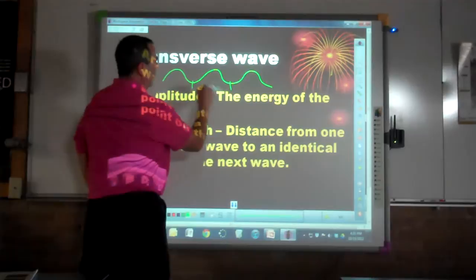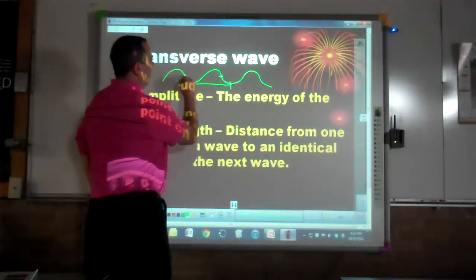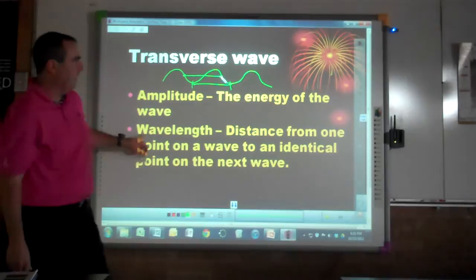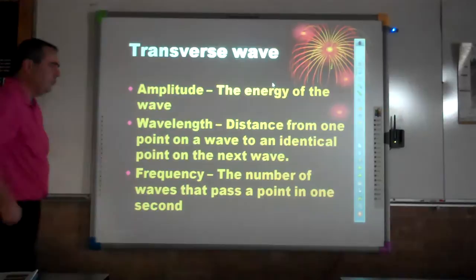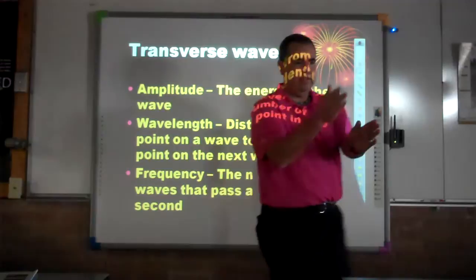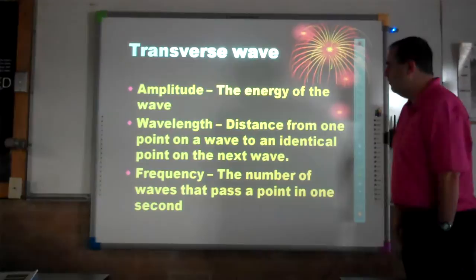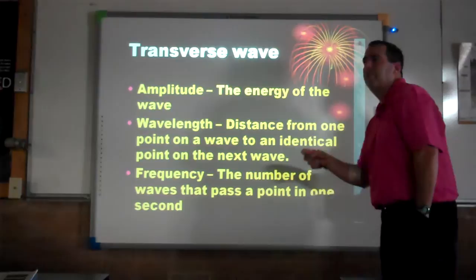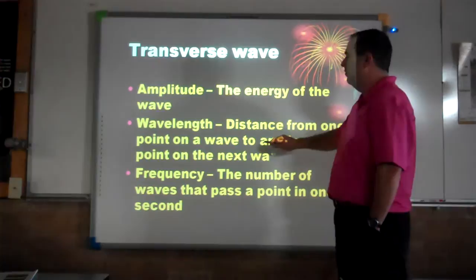Because the wave is symmetrical, these distances are going to be identical — that's your wavelength. The last property is frequency, which is more of a timing thing. If I start a stopwatch and count waves passing a point, we're counting how many waves pass a point in one second. If you hear something of 25 hertz, that means 25 waves per one second of time.